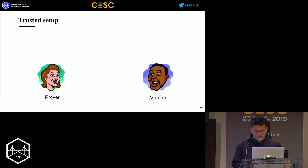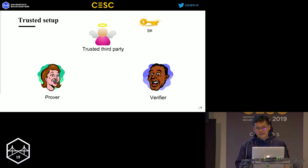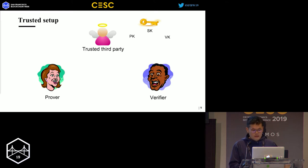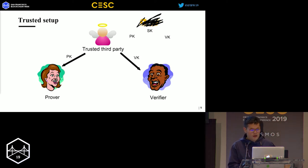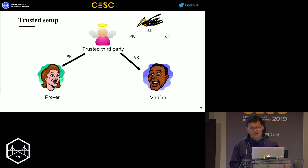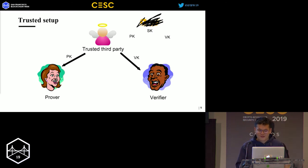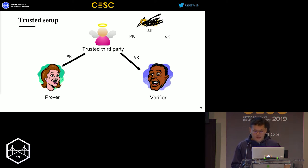For the trusted setup, suppose we have a trusted third party. He generates a secret key and uses it to generate a public key and a verification key for the verifier and prover to use in the following proof. But in the real world, we don't know how to find a centralized trusted third party, and if we could, we wouldn't need a decentralized blockchain anymore, because we already have a trusted third party.